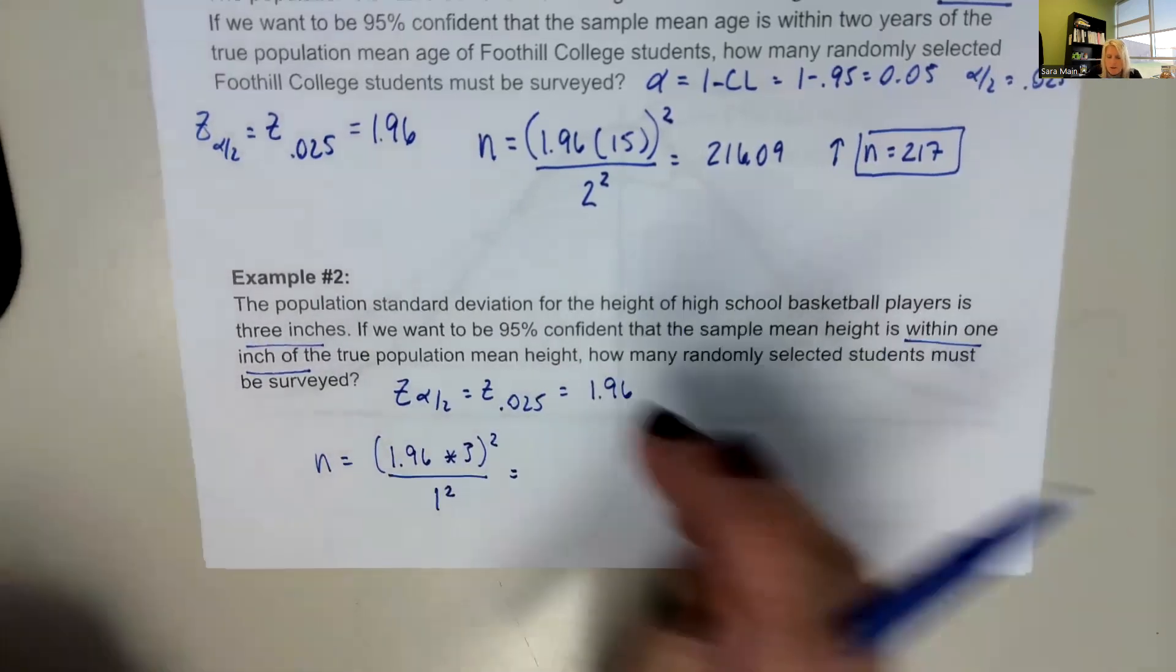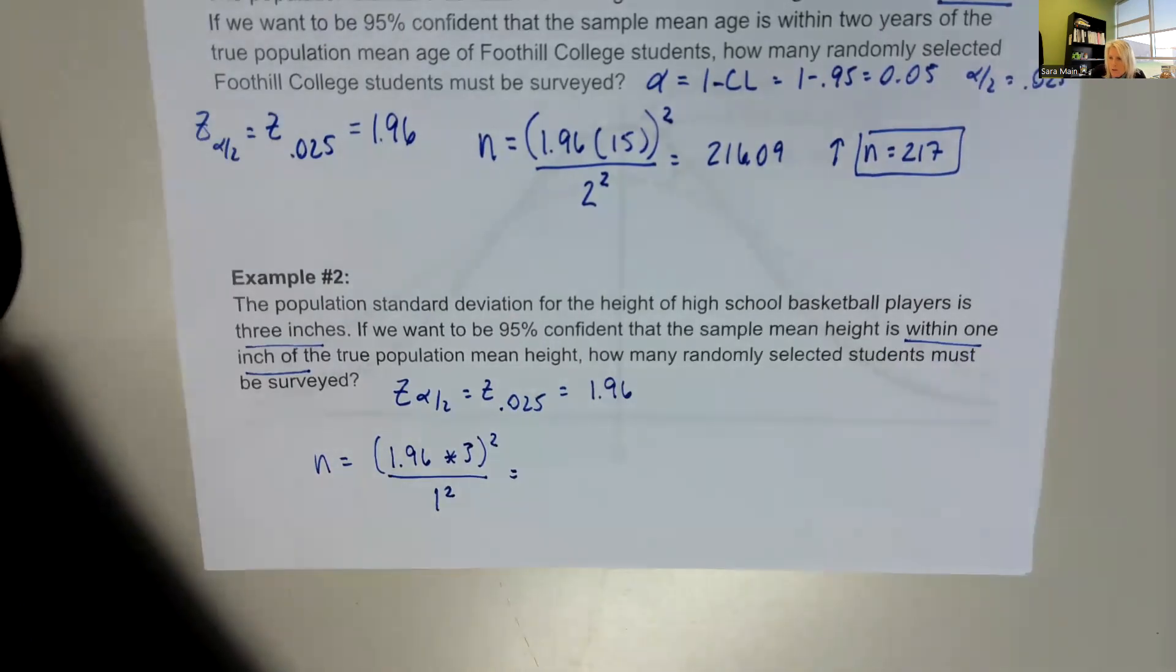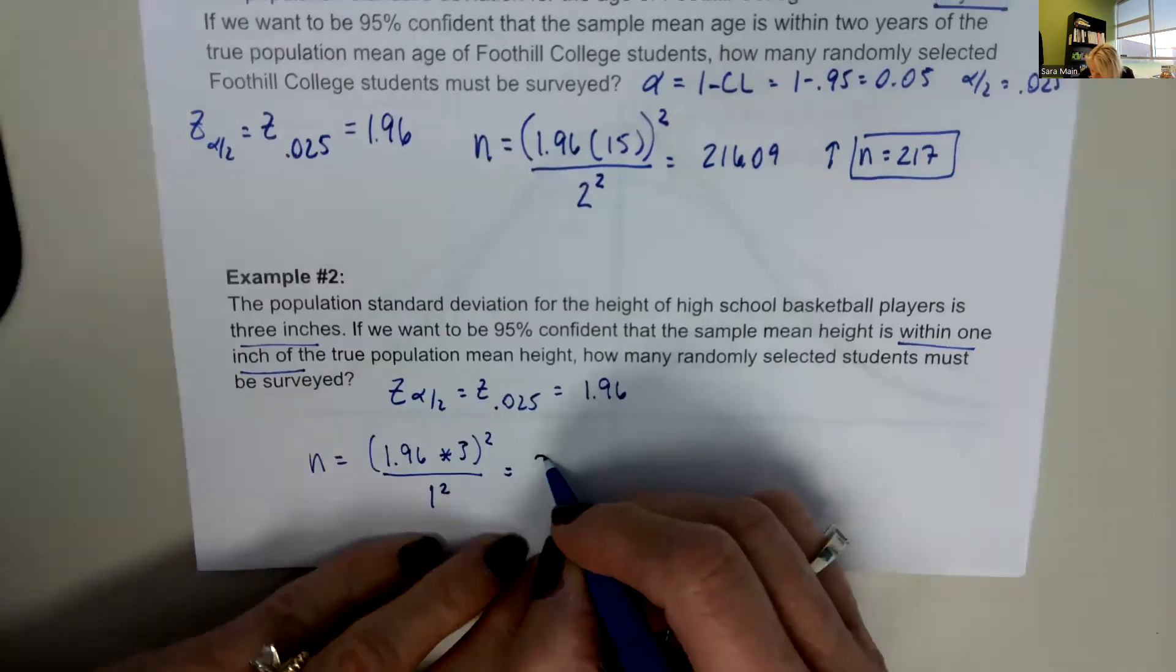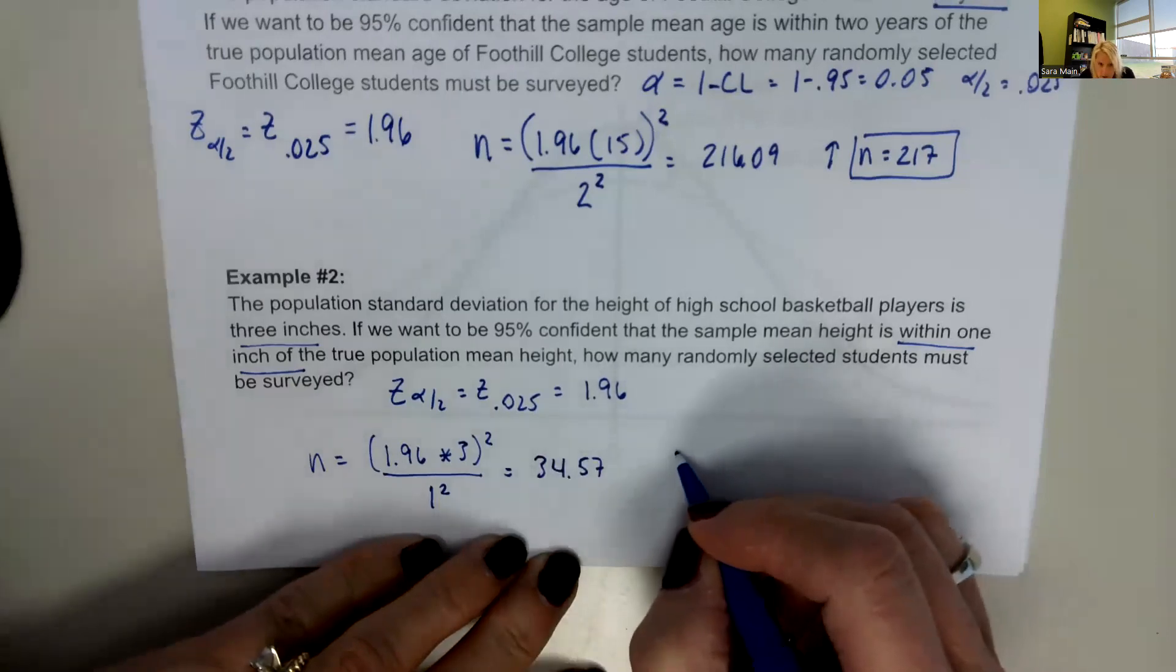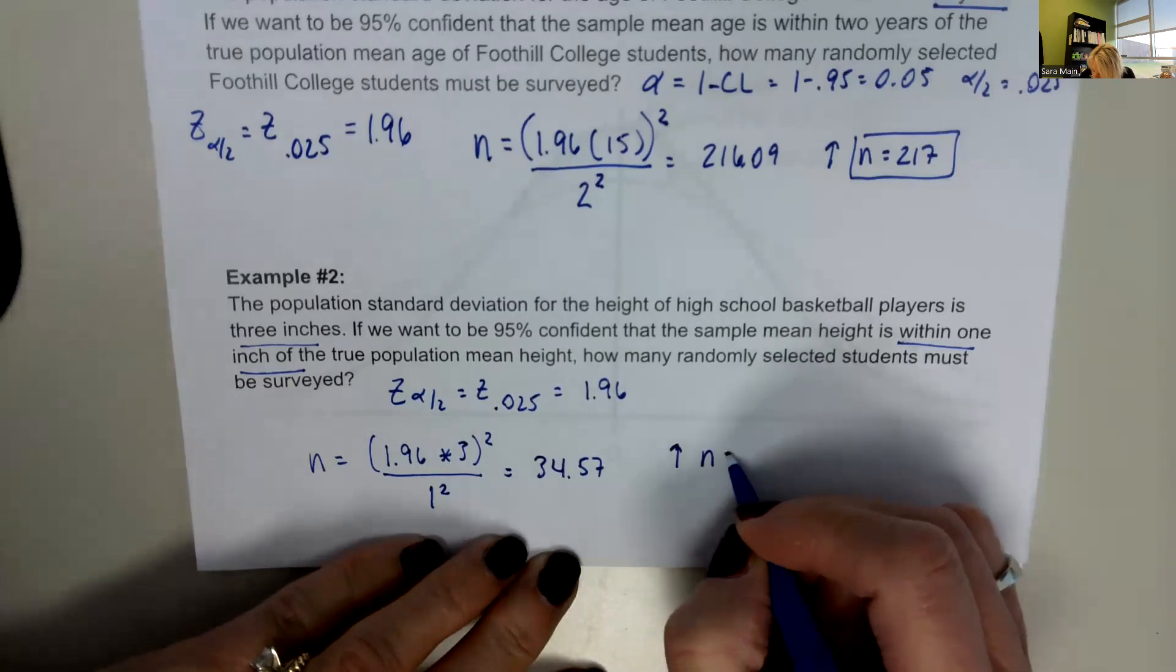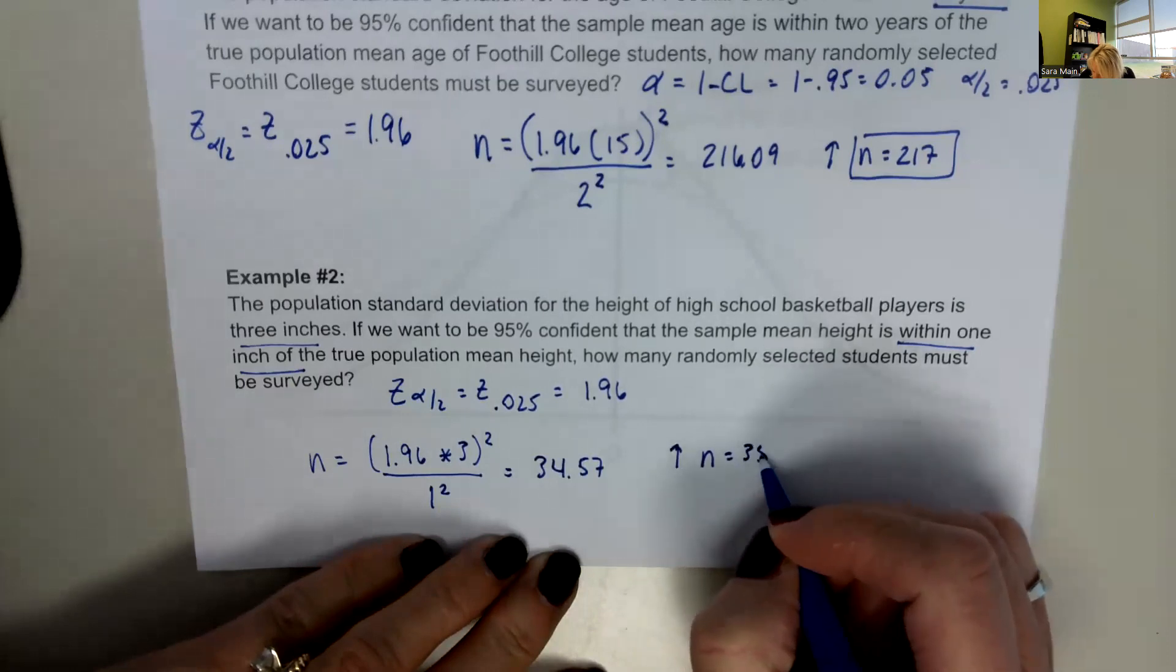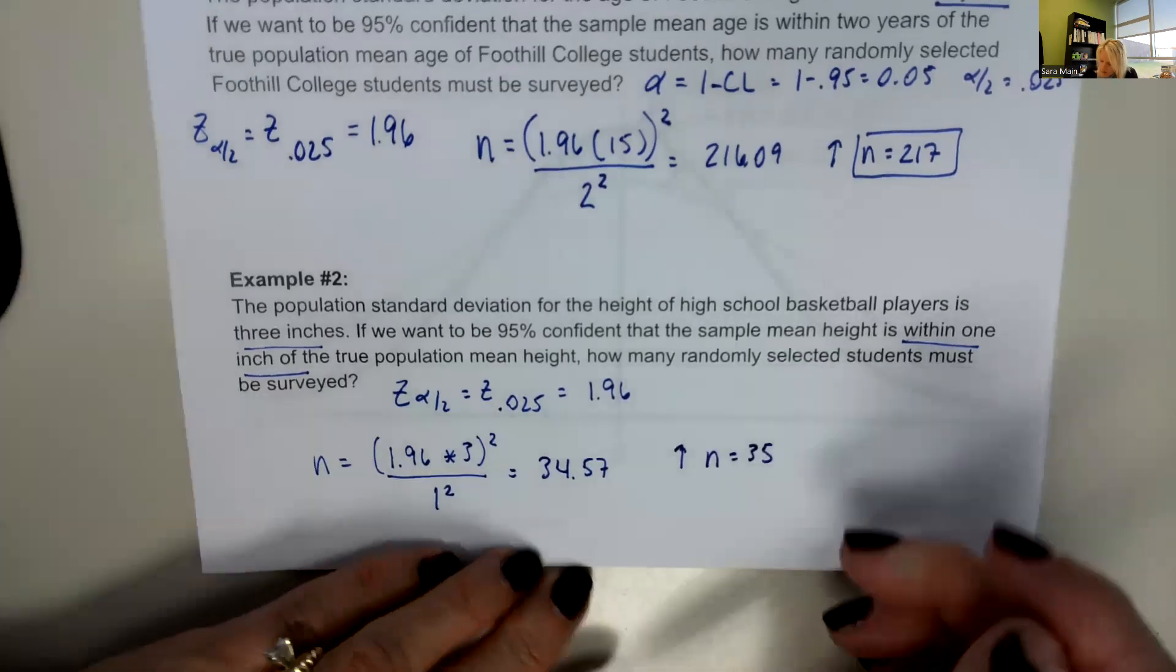And you'll see in Desmos that I did this one as well. And that came out to be 34.57. And so that means we always round up. So it's going to be n equals 35 players need to be surveyed.